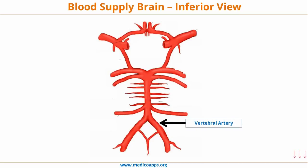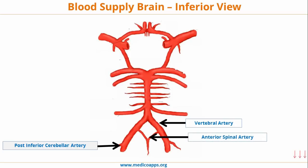We have the vertebral arteries — on both sides, vertebral arteries arise from the subclavian artery. These vertebral arteries travel through the foramina of the cervical vertebrae, running upward and anteriorly before they fuse to form the basilar artery. Before they fuse, they give two very critical branches: the posterior inferior cerebellar artery and the anterior spinal artery. Both anterior spinal artery branches fuse to form a single anterior spinal artery.